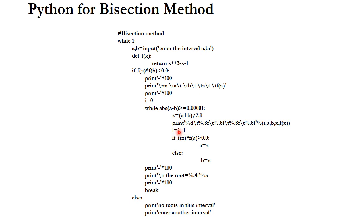We then check whether f(x₀) × f(a) is greater than 0, meaning they are of the same sign, in which case we replace a by x₀. When the interval becomes less than the desired accuracy, the while loop stops and we obtain and print the root. This is the complete bisection program in Python, which can find the root of any function with any desired accuracy.